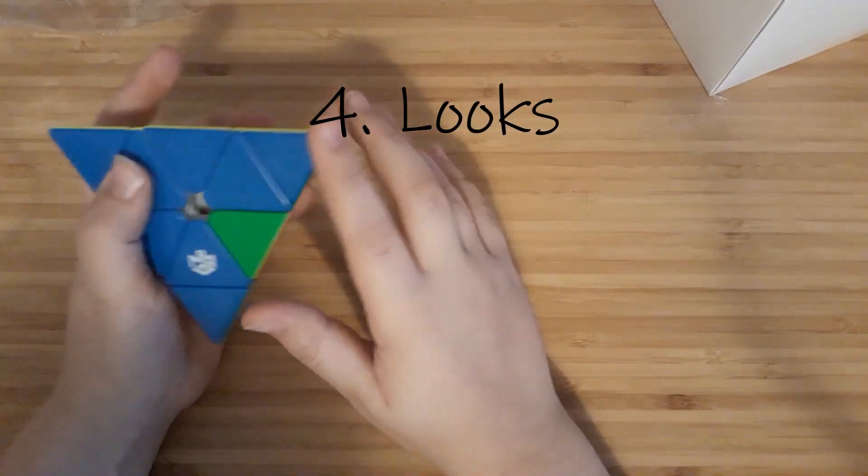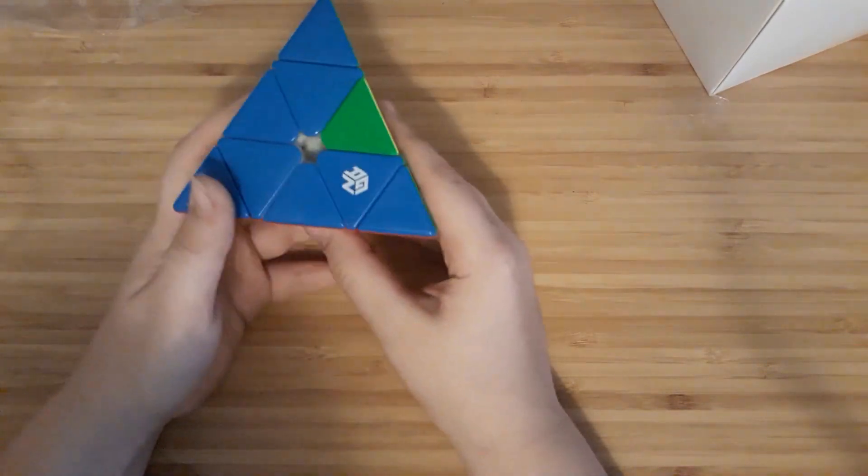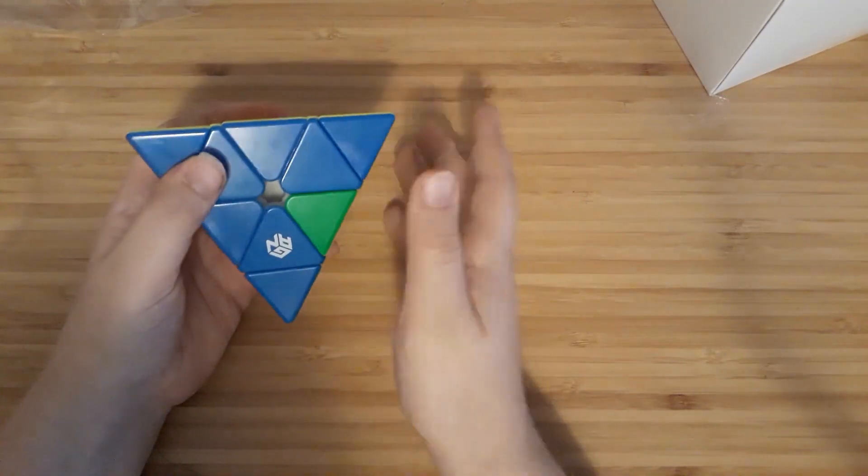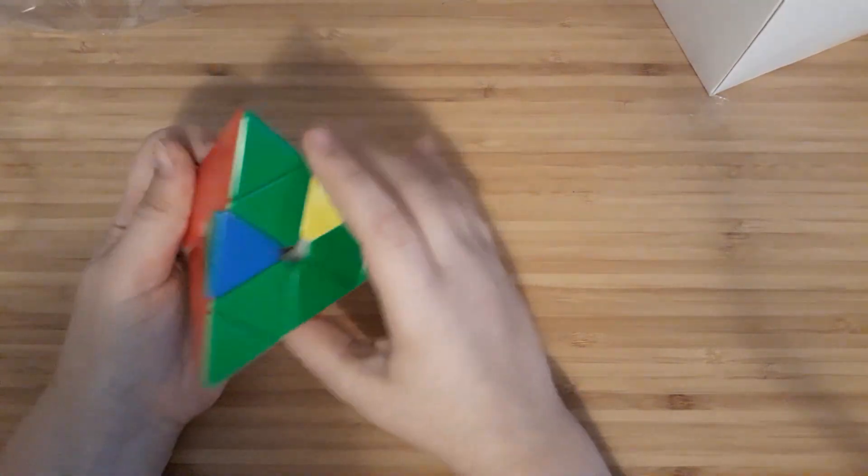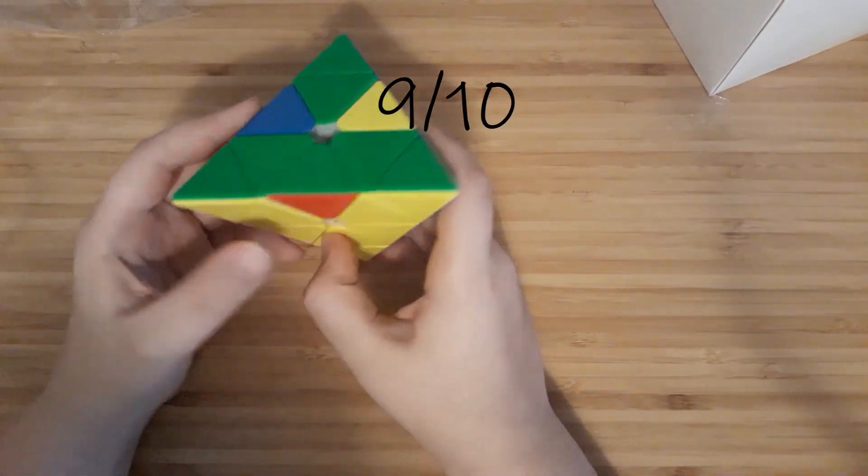So next is looks. As I said, this cube does not have any stickers. It's nice and stickerless, which is the way I like it. And also this blue, it's not too light, but it's also not too dark. Same thing with this green. I really like all the colors. So I think for this one, I'd give it a nine out of 10.